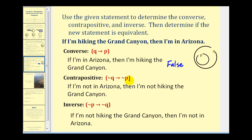The contrapositive is if-not-Q-then-not-P, and this would be: if I'm not in Arizona, then I'm not hiking the Grand Canyon. If I'm not in Arizona means I'm outside Q, and if I'm outside Q, I'm guaranteed to be outside P. Therefore the contrapositive is logically equivalent to if-P-then-Q, therefore this is guaranteed to be true.